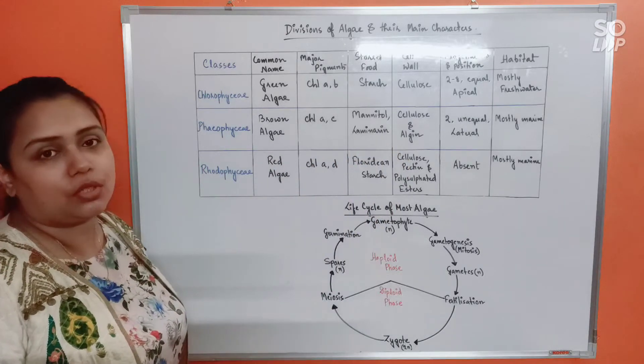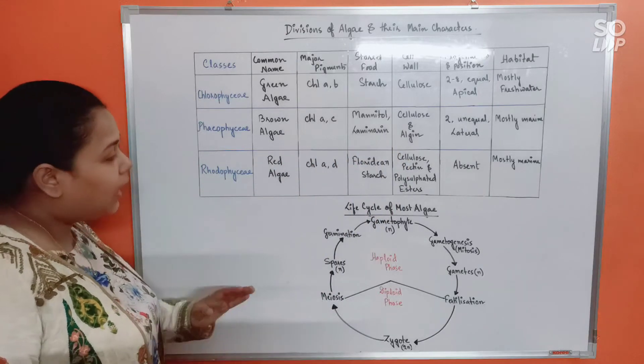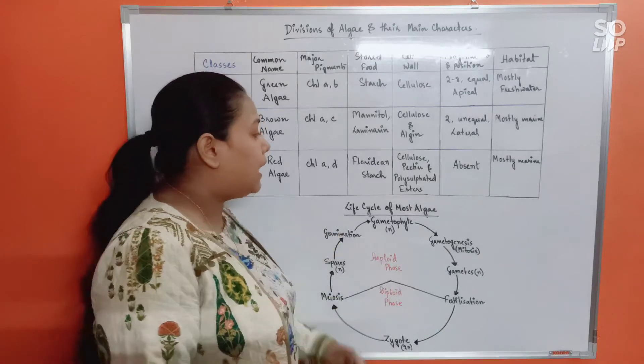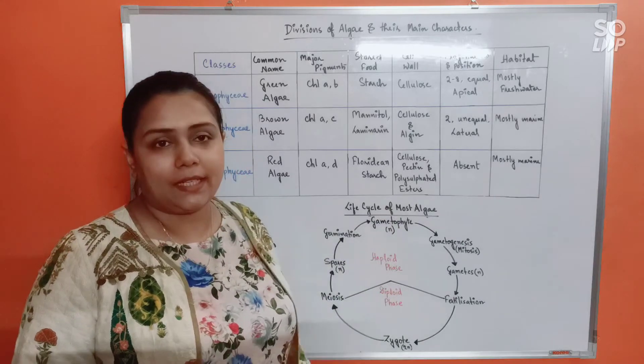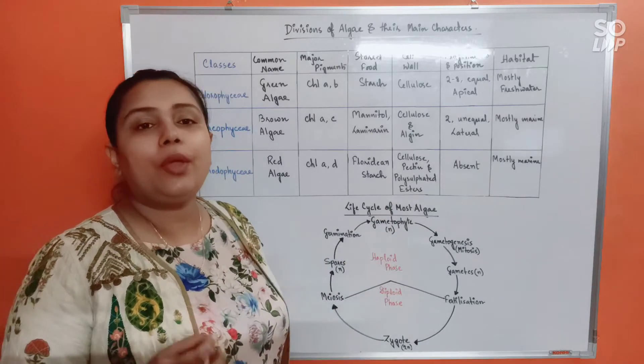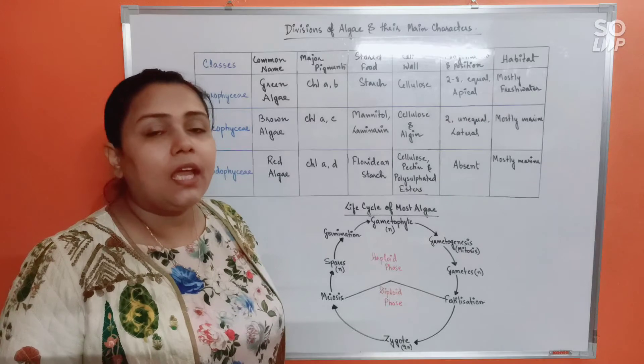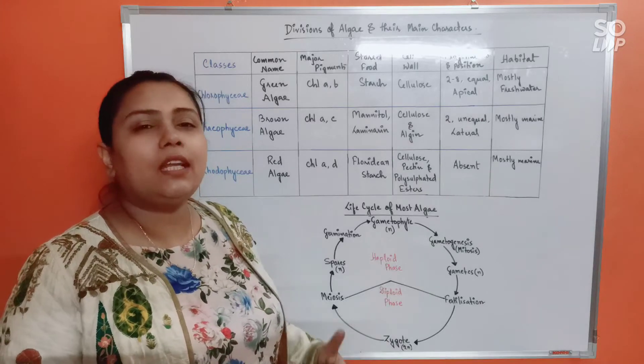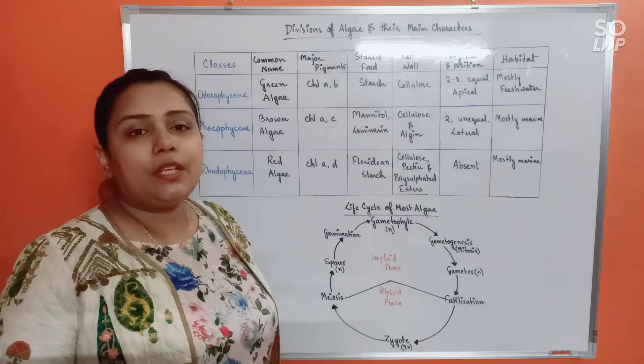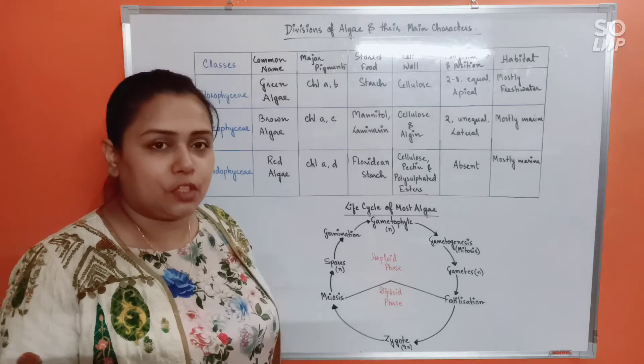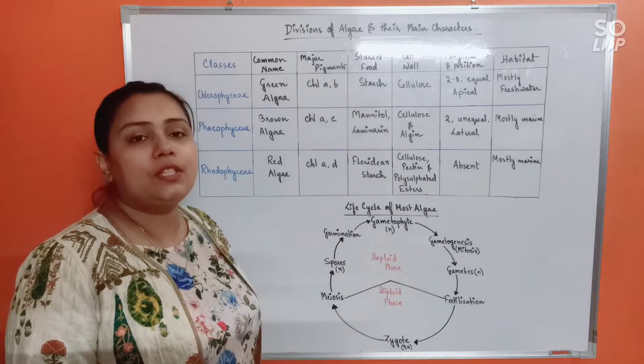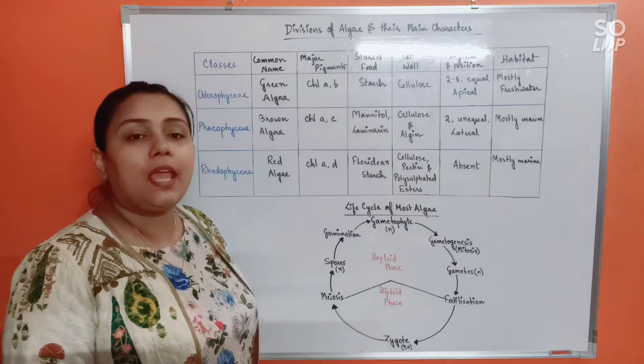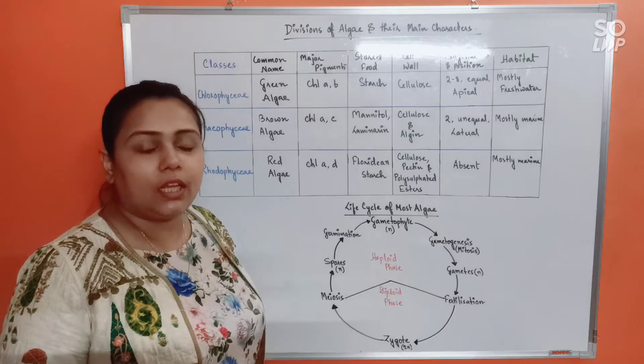And on the last note, we have the life cycle of most algae. Why I've written most algae and not all algae is because there are a few exceptions found in algae in which the life cycle pattern is a little different. About exceptions we'll talk in the last part of the chapter. For now, do remember that we have a haplontic life cycle, means their main plant body in which the algae would exist most of the time in the life cycle will be haploid.